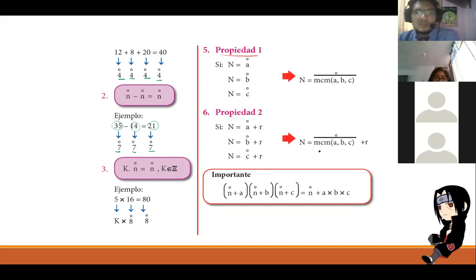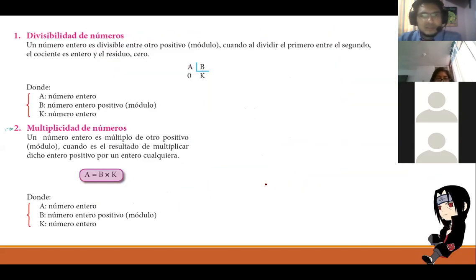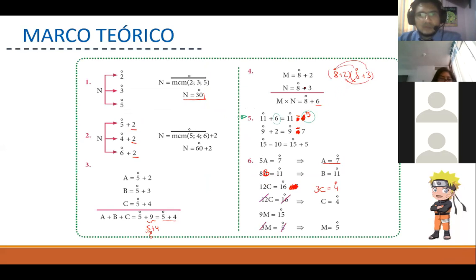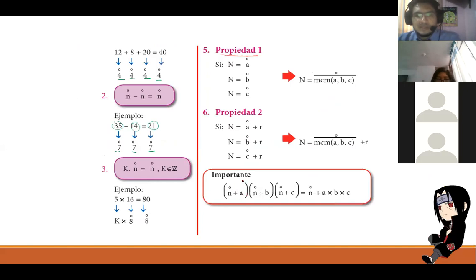Si nosotros multiplicamos K por el múltiplo de N, vendría a ser sencillamente múltiplo de N. Ahí tenemos un ejemplo. Sería 5 por 16, igual a 80. Entonces, K es 5. El 16 es múltiplo de 8. Y el 80 vendría a ser un múltiplo de 8. Algunas de las propiedades que ya habíamos visto anteriormente, que ya se las habían puesto como propiedad 1 y 2, me parece, solo que se las pusieron con numeritos. 5 y 6, propiedad 1, justo ahí dice. Si tenemos un número que es múltiplo de A, múltiplo de B, múltiplo de C, diremos que el número va a ser el mínimo común múltiplo de los números A, B y C. Lo mismo. Si igualamos los residuos, tendríamos que sería el múltiplo del mínimo común múltiplo de los números A, B y C.